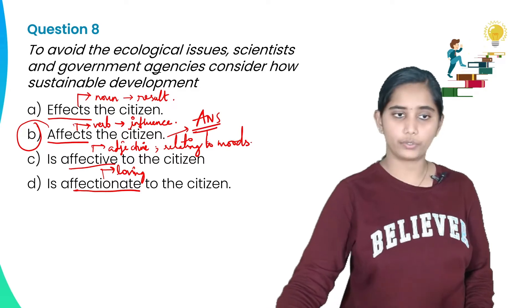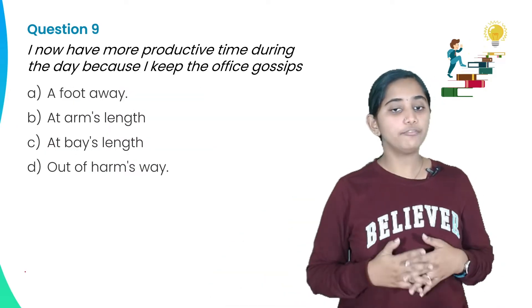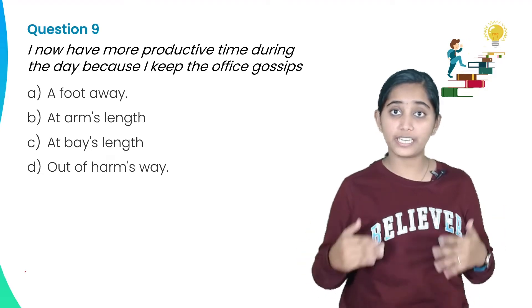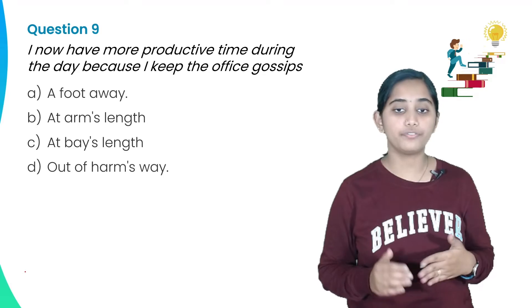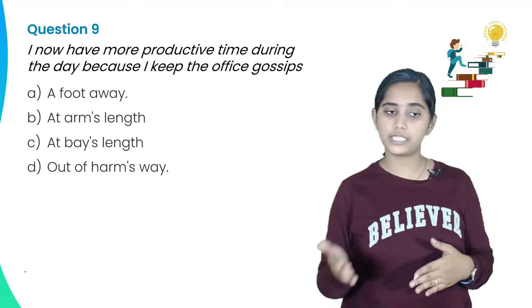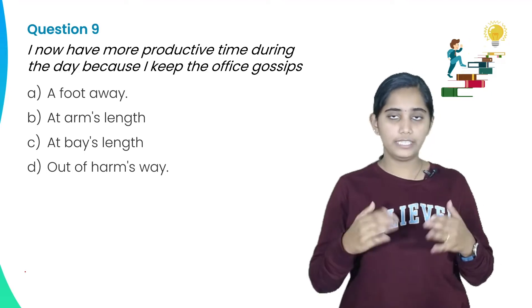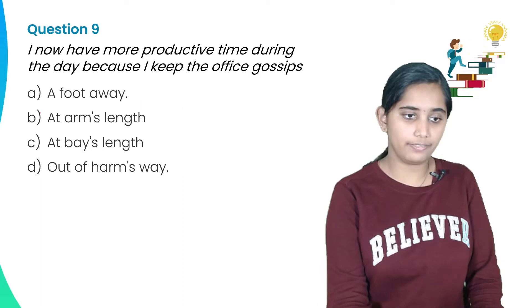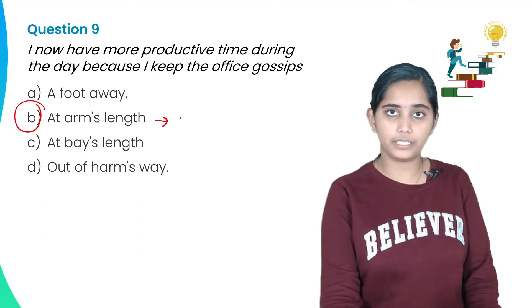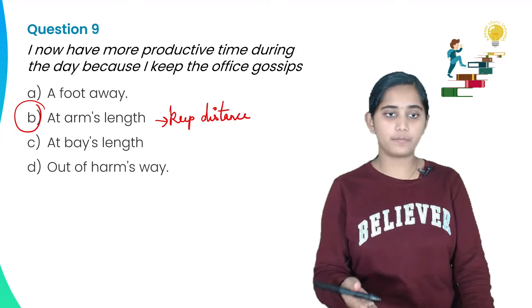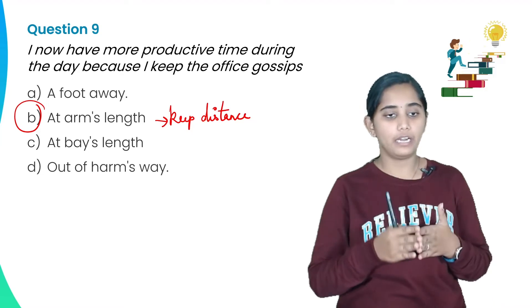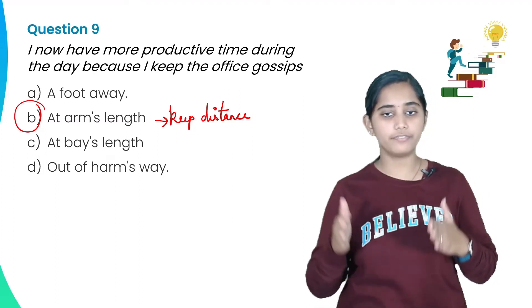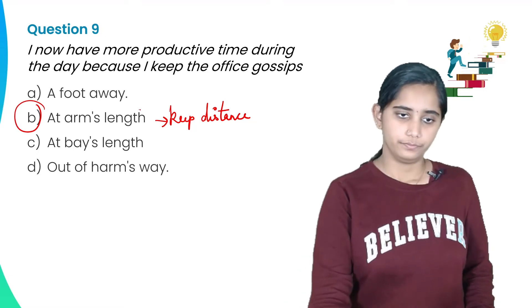Next question: 'I now have more productive time during the day because I keep the office gossips dash.' Options: A) a foot away, B) at arm's length, C) at bay's length, D) out of arm's way. 'At arm's length' means to keep a distance from something. So the answer is: I keep the office gossips at arm's length. Option B is the answer.